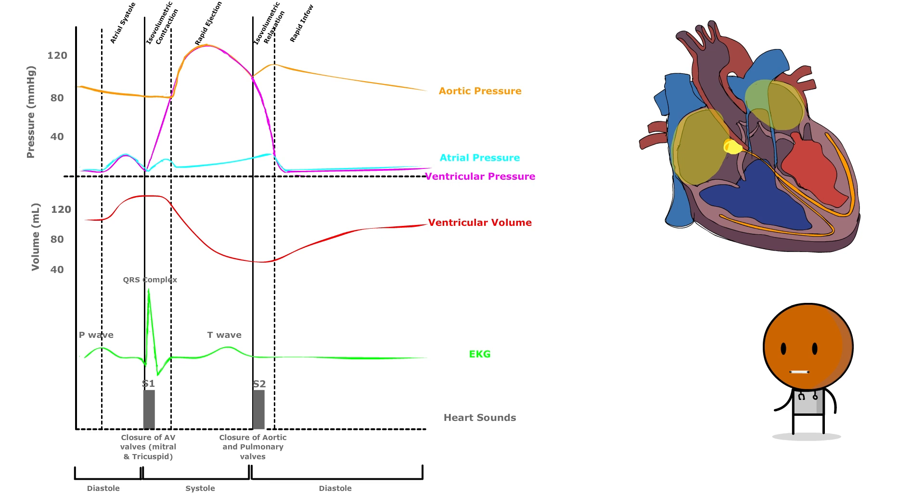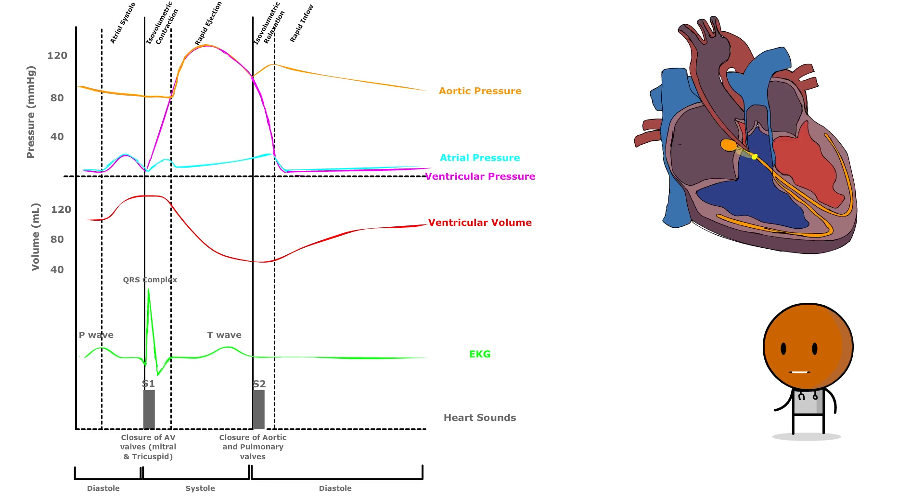Phase number three is isovolumetric contraction. Now, as the ventricles begin to contract, the AV valves close. Atrial pressure briefly dips as the atrial chambers begin to relax and expand again, leading to X descent in the pressure curve.